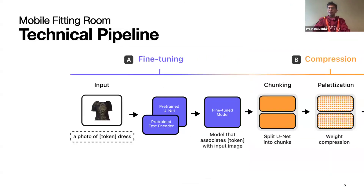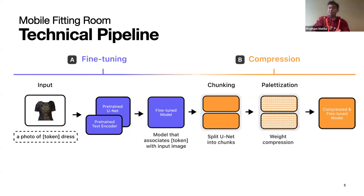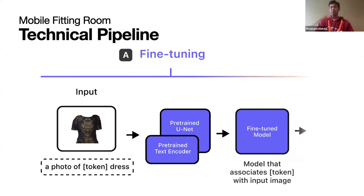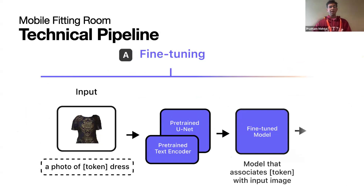Let's talk about the technical pipeline through which we achieved this. The first step is fine-tuning. We followed the approach from DreamBooth in order to fine-tune Stable Diffusion v1.5. To do this, we fine-tuned the UNet and a text encoder on a small number of reference images of a single garment, along with text prompts containing tokens that uniquely identify this garment. This allows us to use this unique token every time we want to add this garment to a person. However, this fine-tuned model is still too memory, storage, and compute intensive to run on-device, and it is incompatible with Apple devices as it stands.